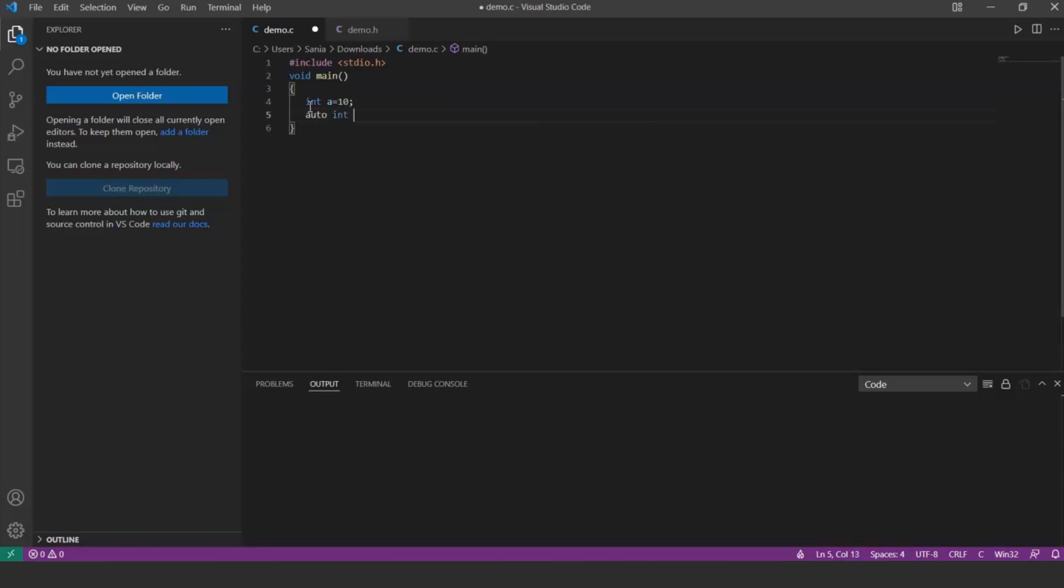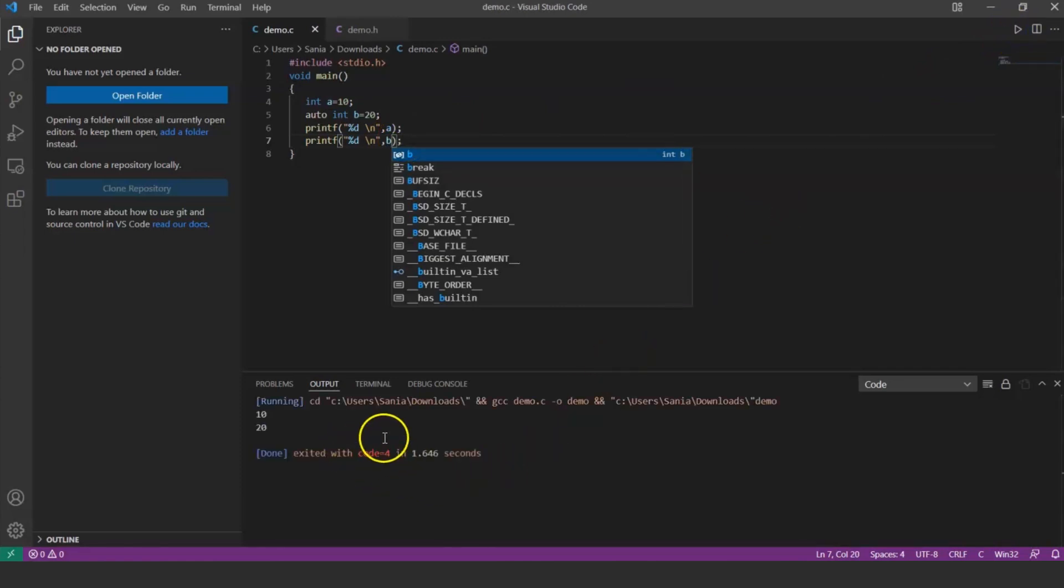Auto int b equals 20. Printf percent d comma a, and let's print the value for b. And here you get the output.